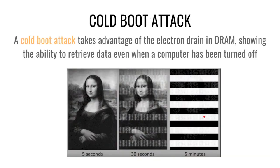A great example of how electrons actually leak out in DRAM is the cold boot attack. If you grabbed somebody's DRAM chips immediately after they turned their computer off and looked at a picture of the Mona Lisa, after five seconds she would be intact. After 30 seconds she would start to fade away as electrons leak, and five minutes later she would be completely gone. This is a great example of how electrons are actually draining in DRAM.